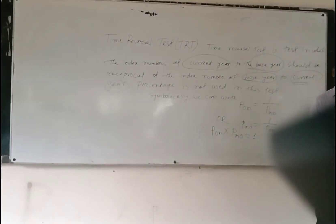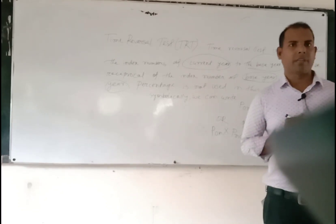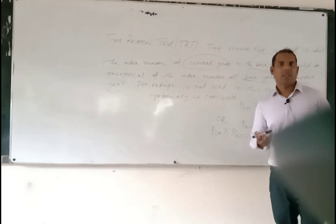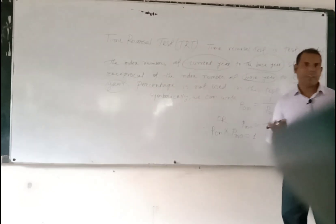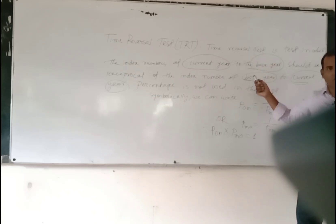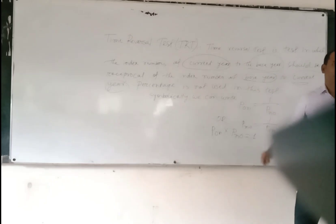Here is reciprocal. A diamond means that base year and current year would be reciprocal to each other. P_on into P_no equal to 1. If it equals 1, then it satisfies the time reversal test. And if it is not 1, then it does not satisfy this. This is the factor reversal test.